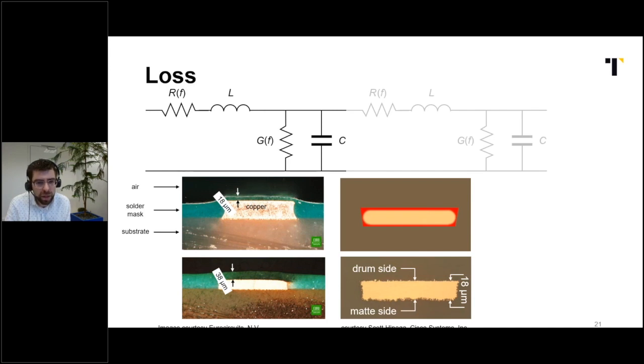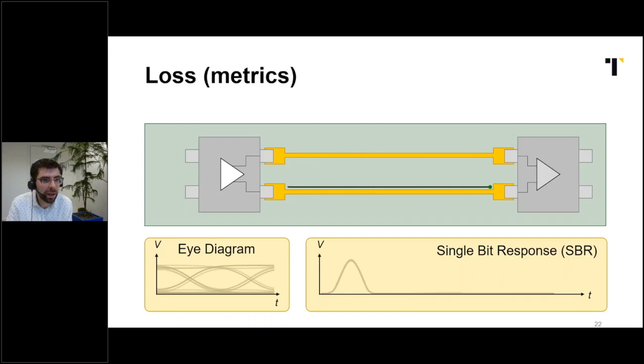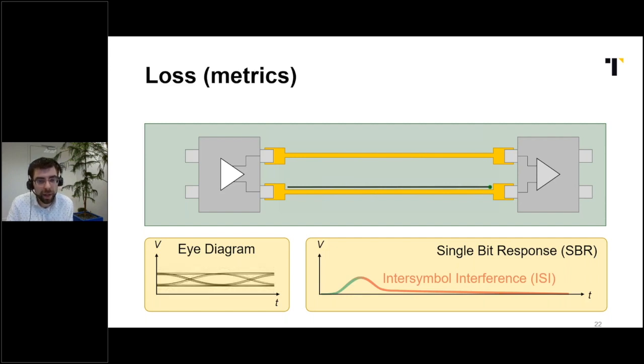So how does this loss show up in our signal integrity metrics? As you will see, a single bit will be attenuated due to loss. But the loss is frequency dependent, low pass, and this will also smear out the pulse in time. Watch. Notice that already half of the pulse width will interfere with subsequent bits. That's the red part. So intersymbol interference is not only due to reflections, but also due to loss. And the loss can also be seen in a smaller eye opening. So in sum, loss is important, but it's hard to predict and control.